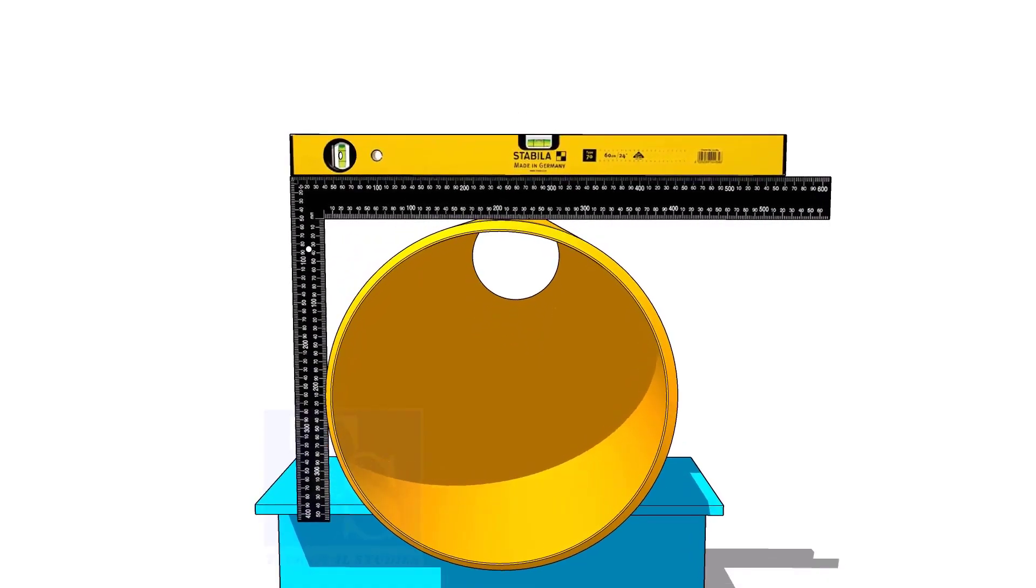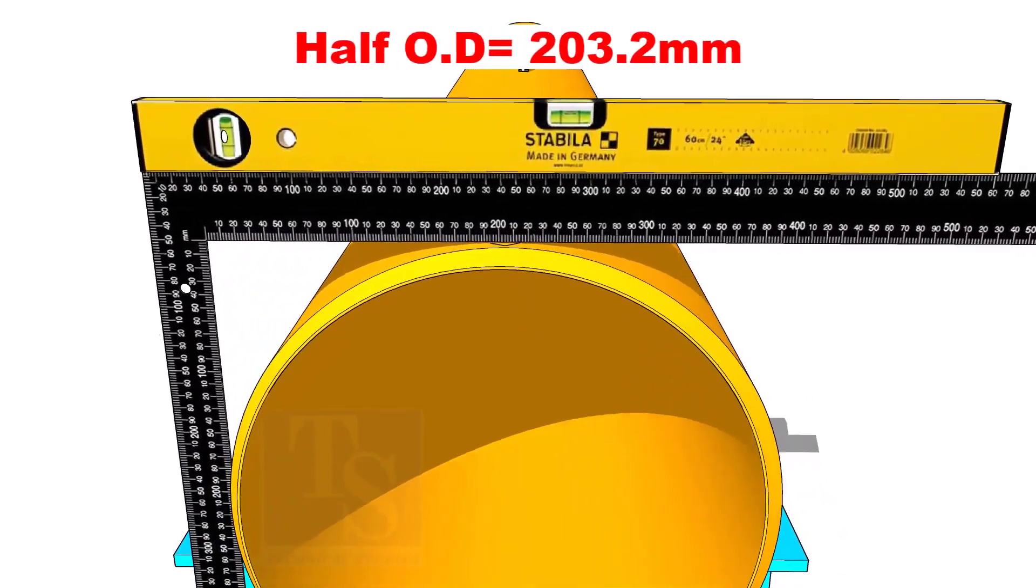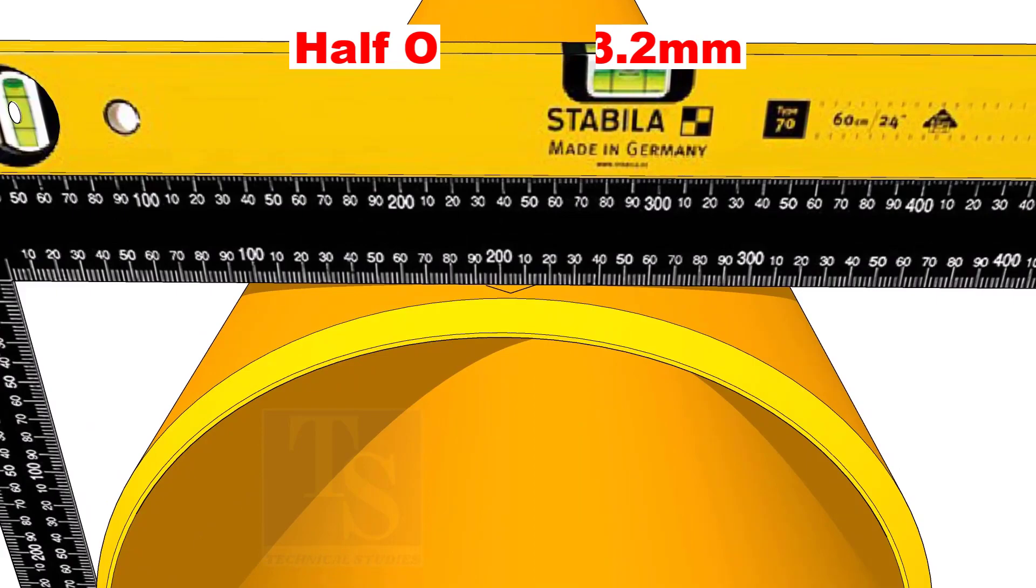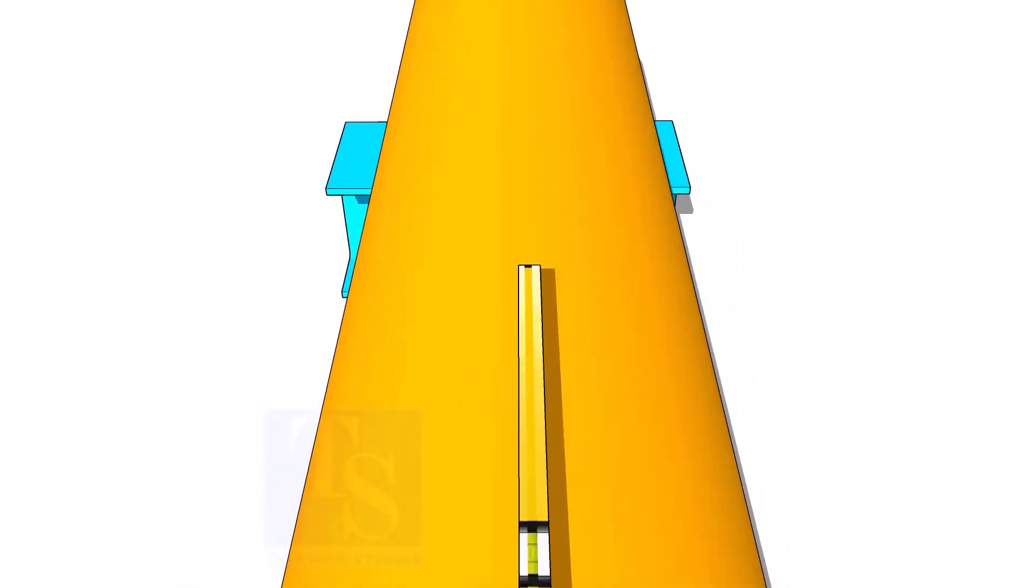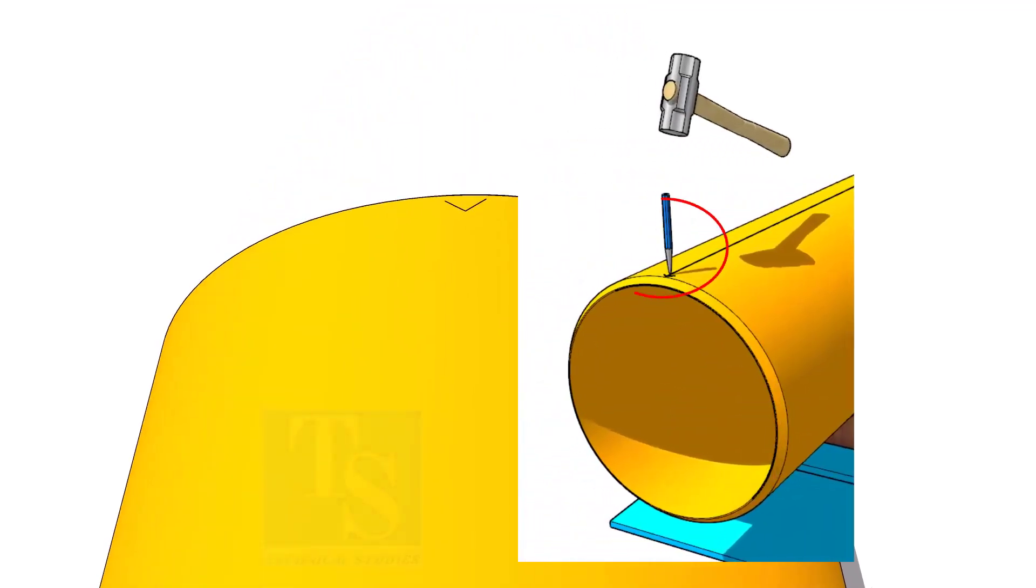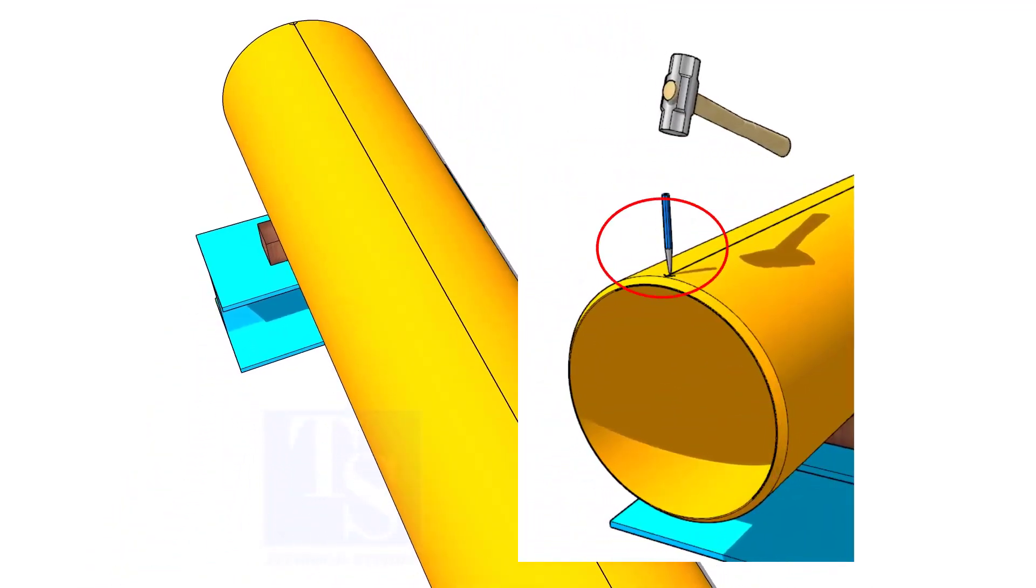Mark the half OD on the top of the pipe. Don't forget to cross-check from the opposite side. Mark the center of the other end of the pipe and draw a line. If required, punch mark the line ends.